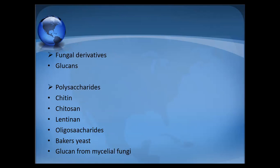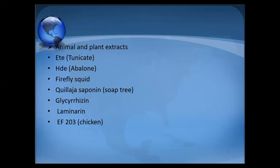Fungal derivatives include glucans from yeast cell walls. Polysaccharide molecules include chitin, chitosan, lentinan, and oligosaccharides. Chitin and chitosan are components of the arthropod family — they form the exoskeleton of crustaceans — and from these we can also prepare immunostimulants.